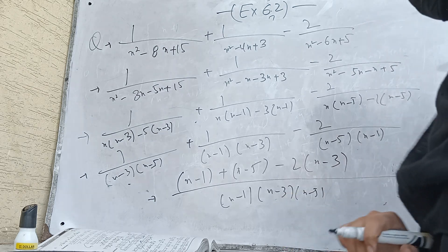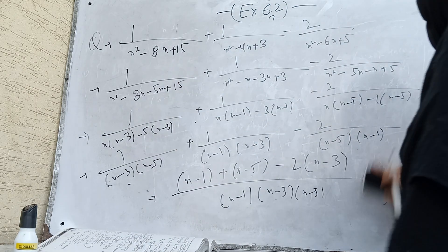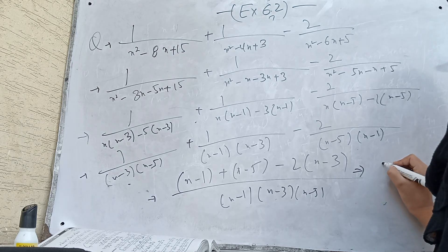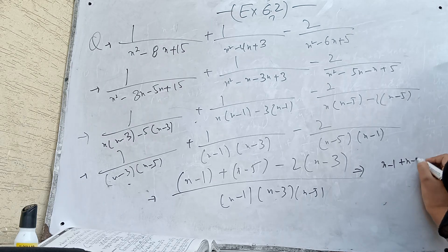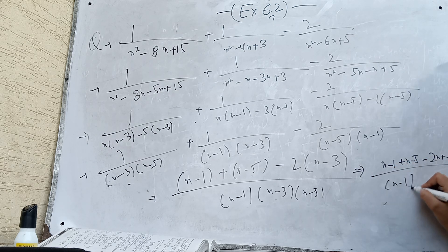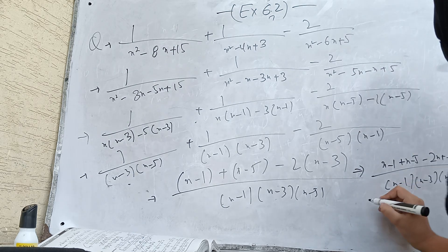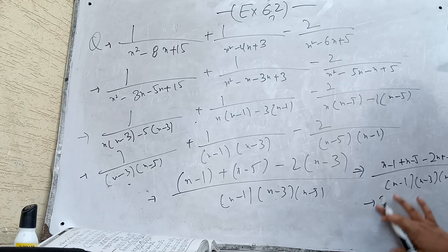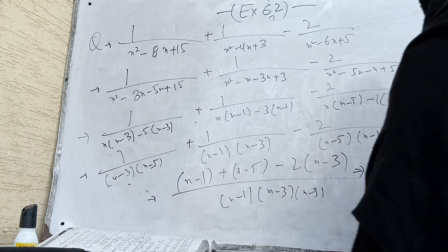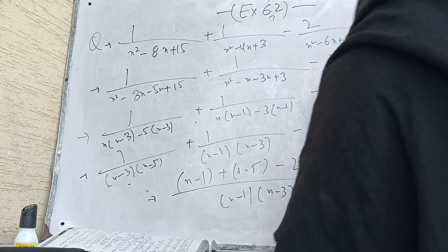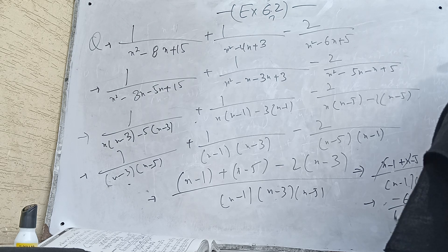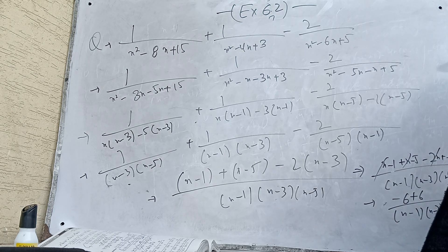So we have (x-1) plus (x-5) minus 2(x-3), all over (x-1)(x-3)(x-5). Expanding: 2x and minus 2x cancel out; then minus 1 plus 6 minus 5 equals minus 6 plus 6, which equals 0. So the result is 0 divided by (x-1)(x-3)(x-5), which equals 0.